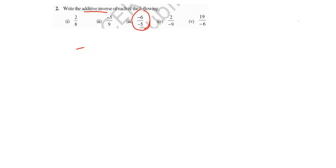The problem is -6/-5. We have to find the additive inverse. Since it has a minus sign in both numerator and denominator, we can say this is 6/5 - they're the same. Now, what is the additive inverse of this one? What do we add so it becomes 0?